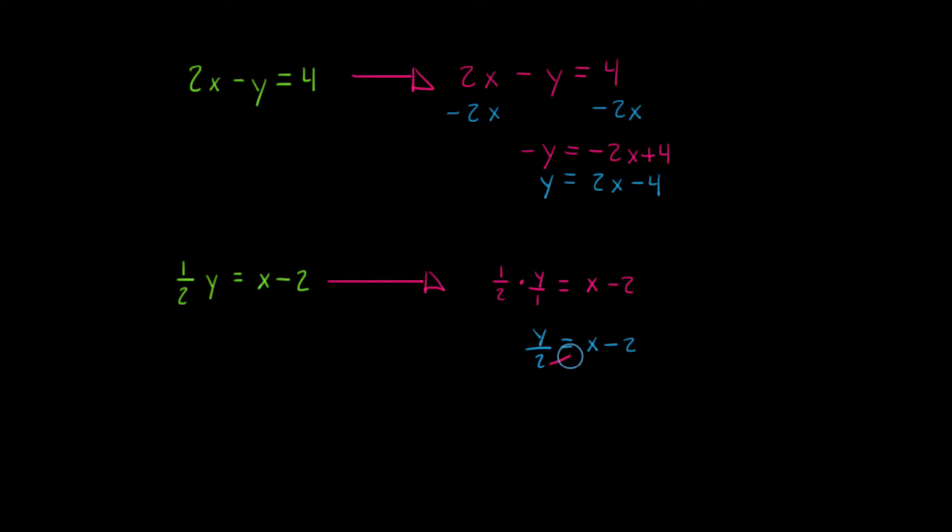And now I'm just going to push the 2 over to the other side by multiplying, but I've got to multiply both terms on the other side of the equation by 2. So I have y is equal to 2 times x, which is 2x minus 2 times 2, which is 4.